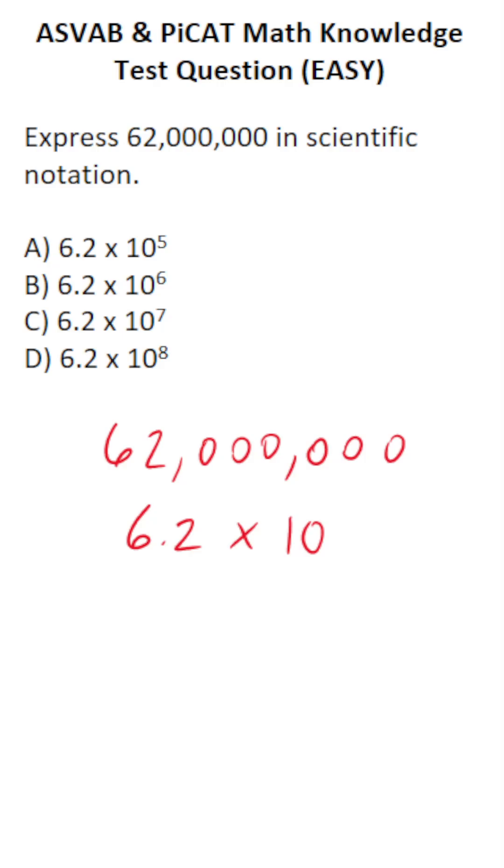We're going to write 62 million as 6.2 so the decimal is going to be there. Right now the decimal is at the end of 62 million. So all we have to do is count how many times we have to move this decimal from the end of 62 million to get to 6.2 and that will be our power.